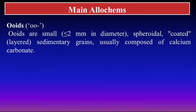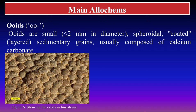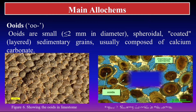The second allochem is ooids, abbreviated as 'oo'. Ooids are small concentric carbonate grains with a diameter of less than two millimeters. They usually form in agitated waters. Here you can see a picture of ooids on the outcrop and their appearance under thin section.